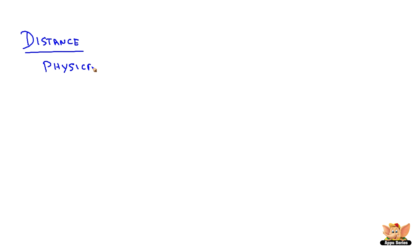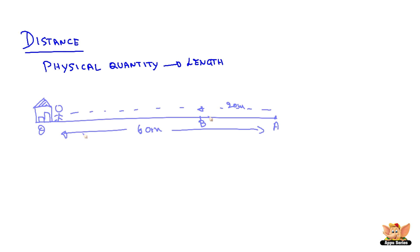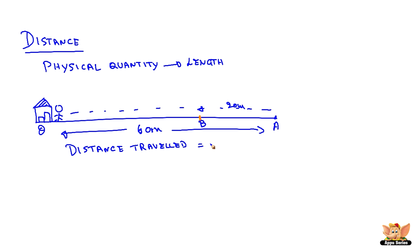Distance is a physical quantity expressed in terms of length. Take an example wherein a man is walking from his house and reaches a spot where there is a shop, 60 meters away at position A. He then walks to another shop located at B, 20 meters from position A. The distance travelled by the man is 60 plus 20, which is 80 meters — 60 from position O to A, and 20 from position A to B.